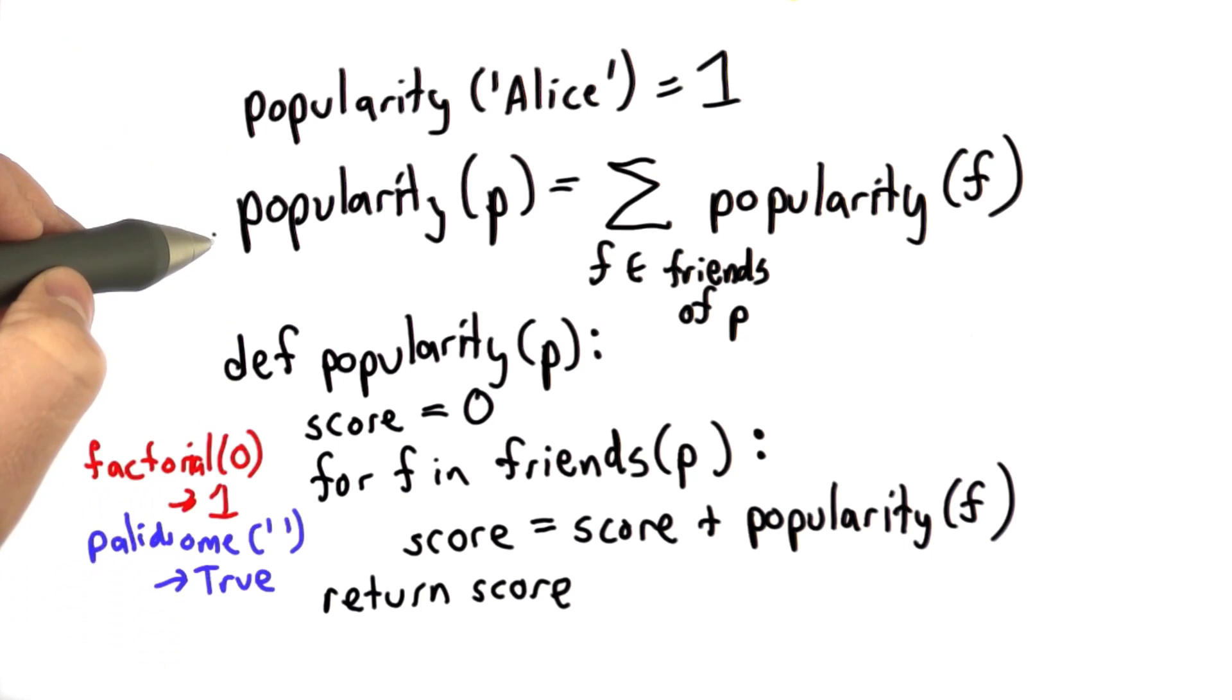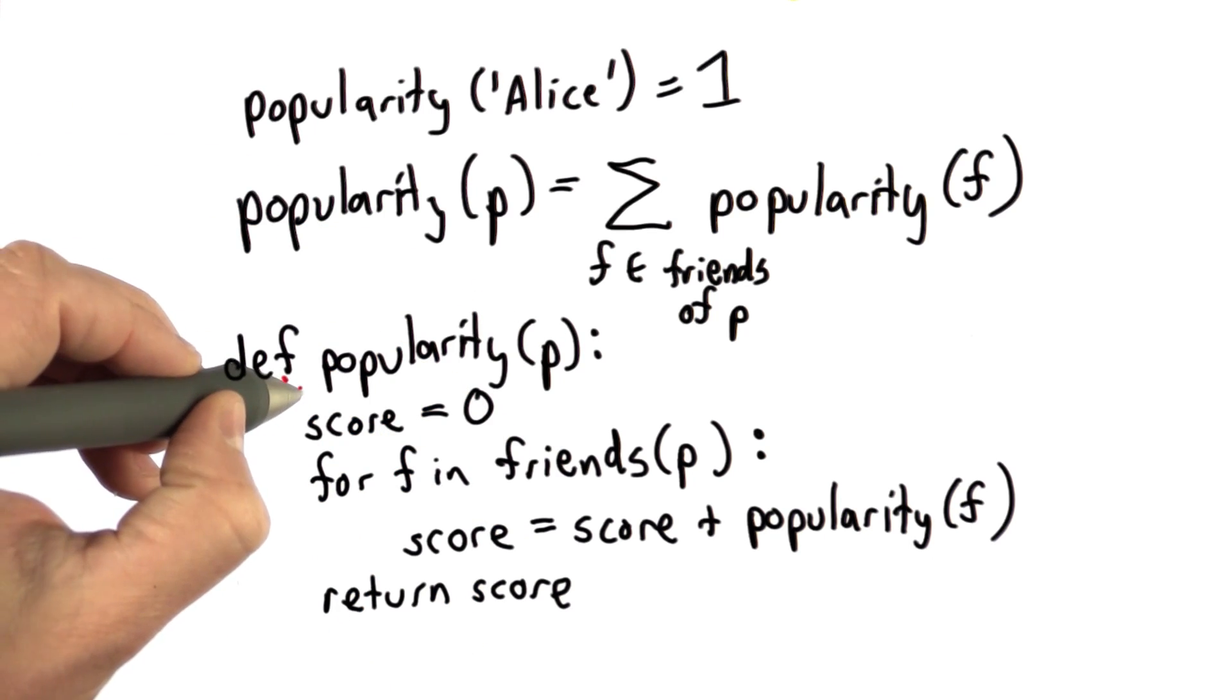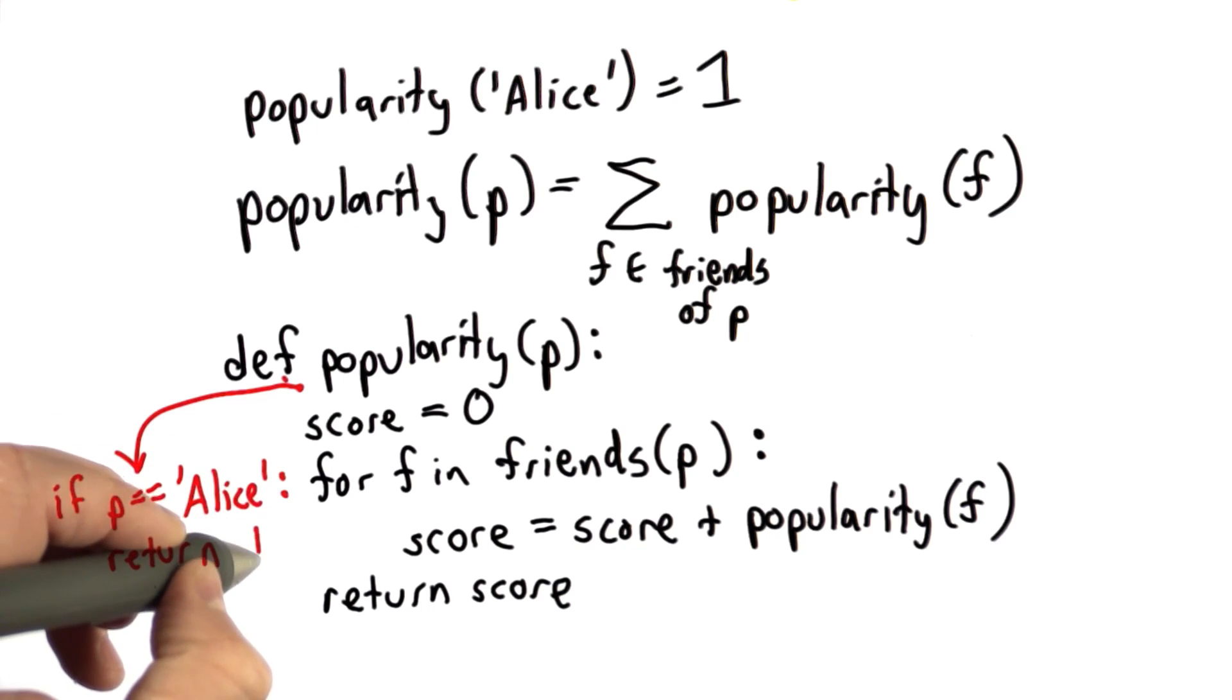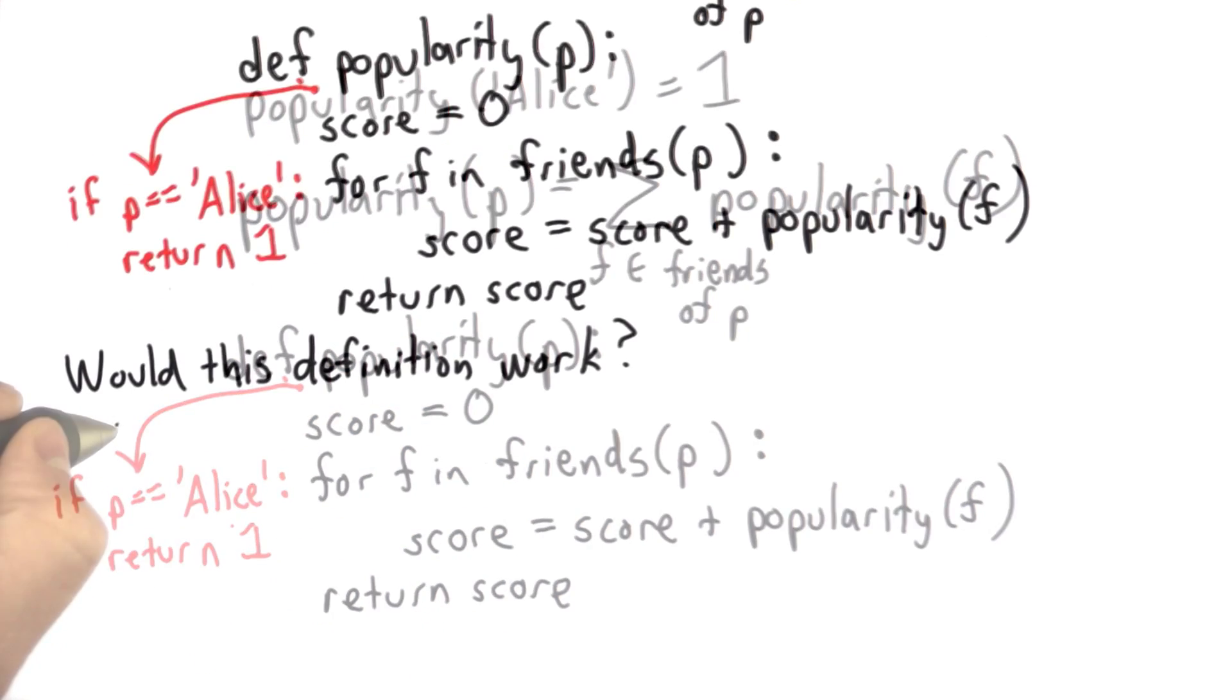And that works like this for the mathematical definition. For the Python code, what we would need to do is add the base case as an if statement. So we'd insert a line here that says, if p is Alice, return Alice's popularity score, which is our base case, which is 1.